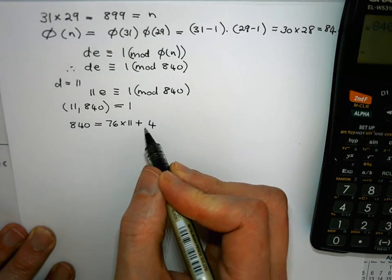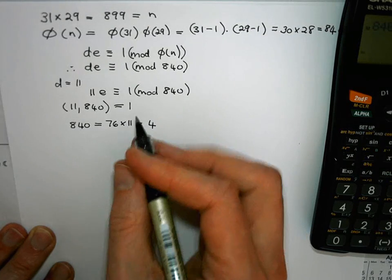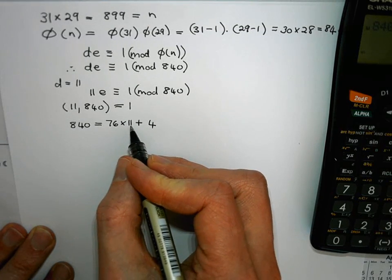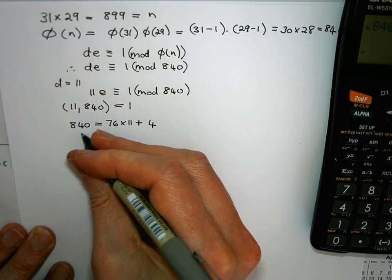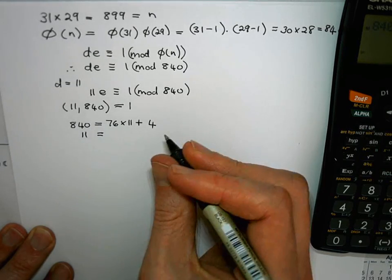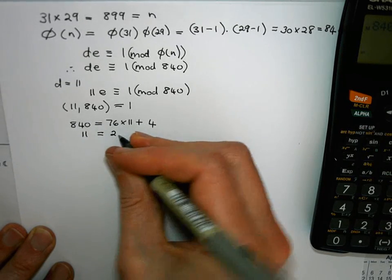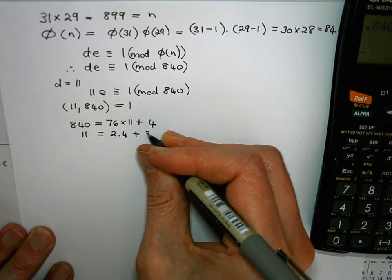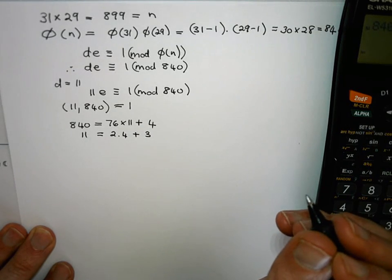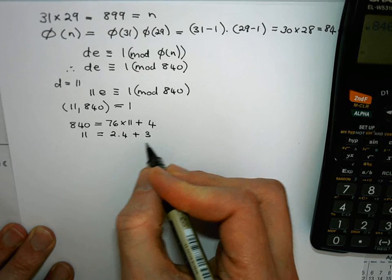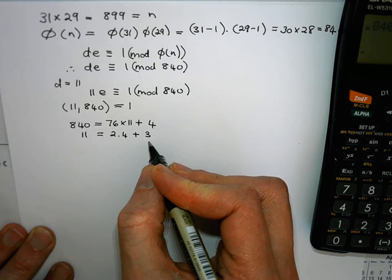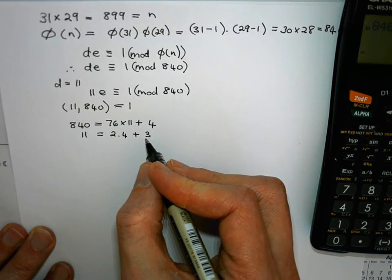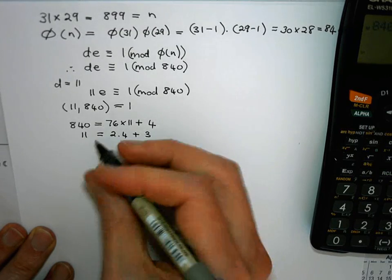So Euclid's algorithm enters the next iteration. So now my x becomes 11 and my y becomes 4. I'm going to divide 11 by 4. 4 goes into 11 twice and it leaves a remainder of 3. Okay so we didn't get 0 yet. It hasn't gone in without a remainder yet. So we enter the next iteration of Euclid's algorithm.